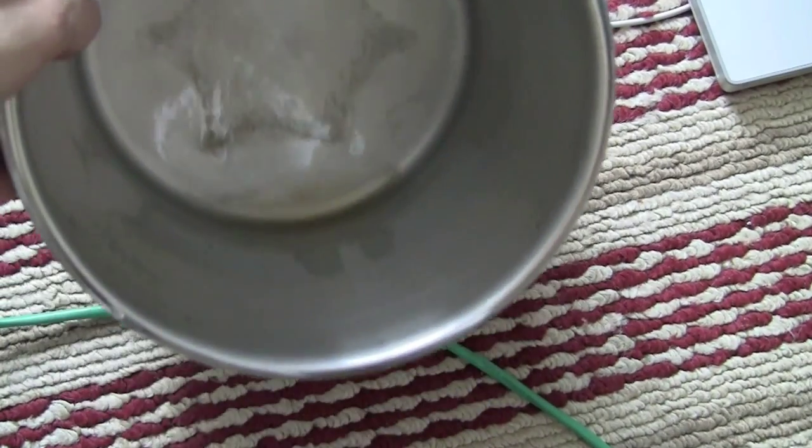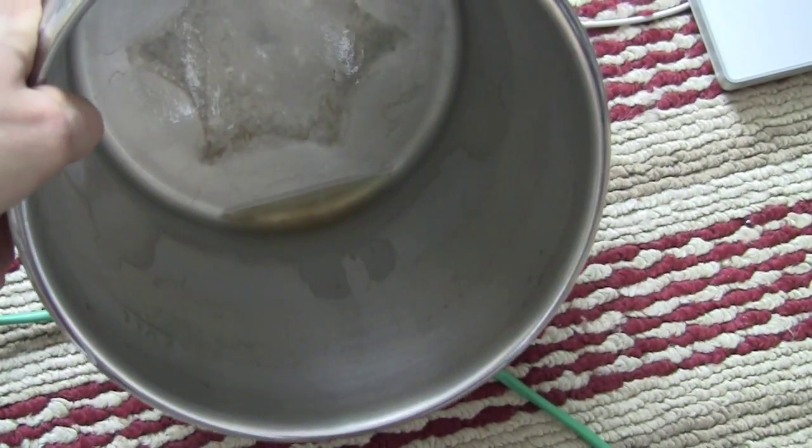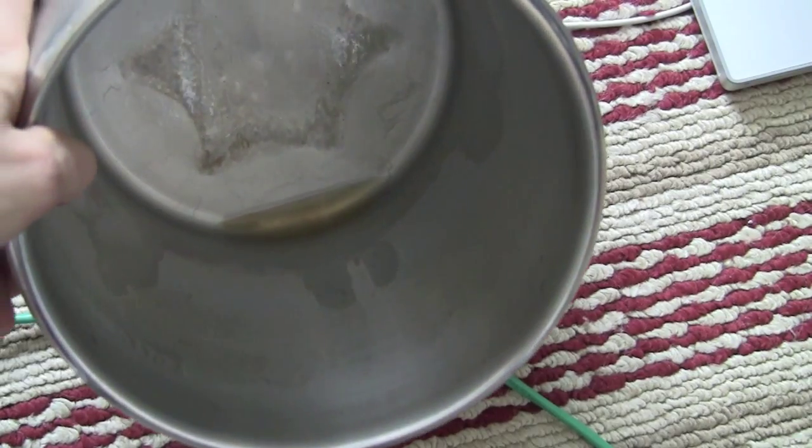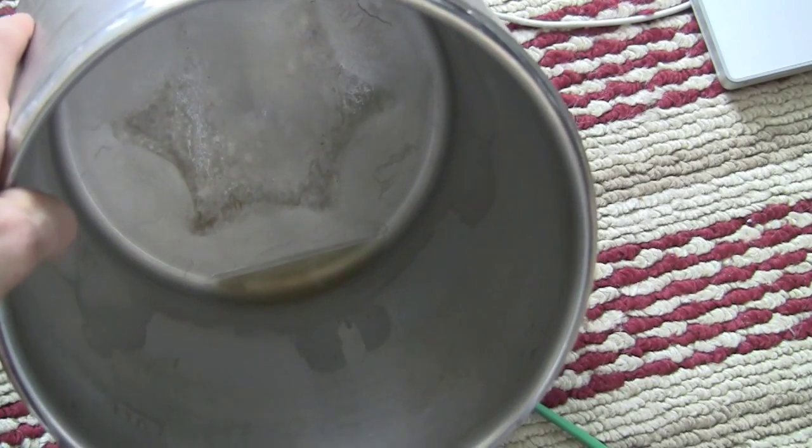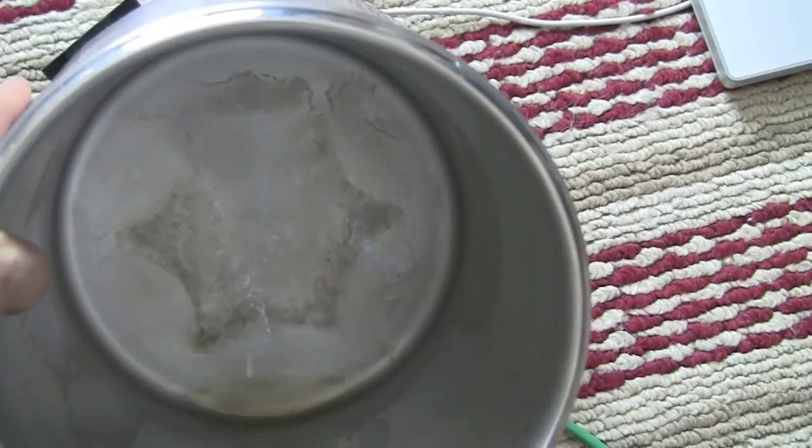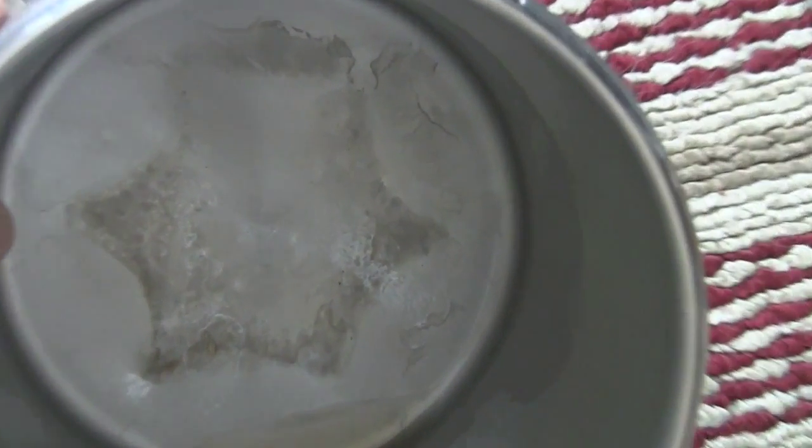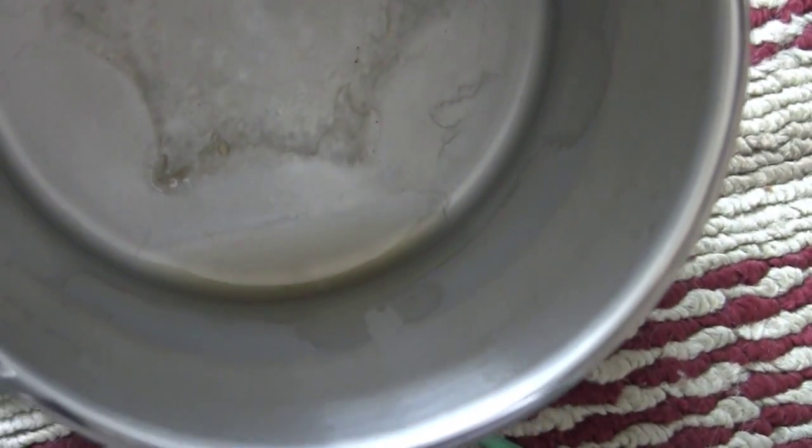So in the bottom here we have the leftover distillation product, which is basically the leftovers that came out of the water. There's a lot of solids here, a lot of pretty nasty smells too. It has quite a strong odor, and this is basically what's in your tap water.